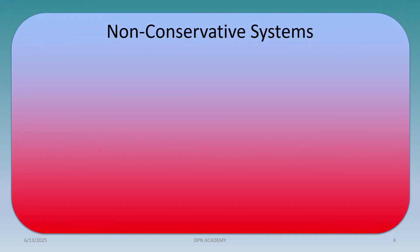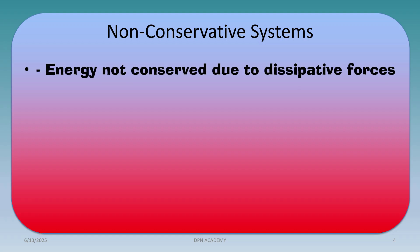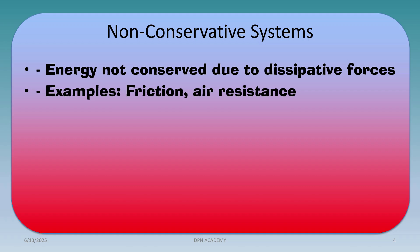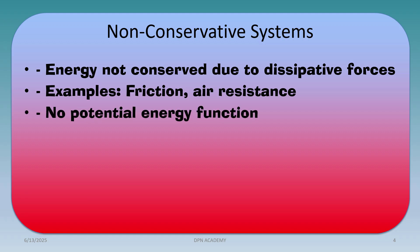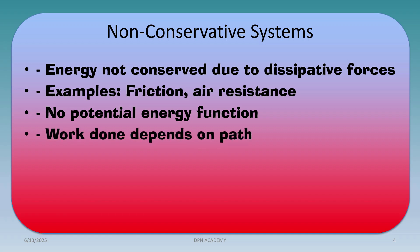What is meant by a non-conservative system? Energy is not conserved in a non-conservative system due to dissipative forces. These dissipative forces are most important while deriving D'Alembert's principle. Examples of non-conservative systems are friction and air resistance. Here, there is no potential energy function, work done depends on the path, and energy is lost due to heat and sound.